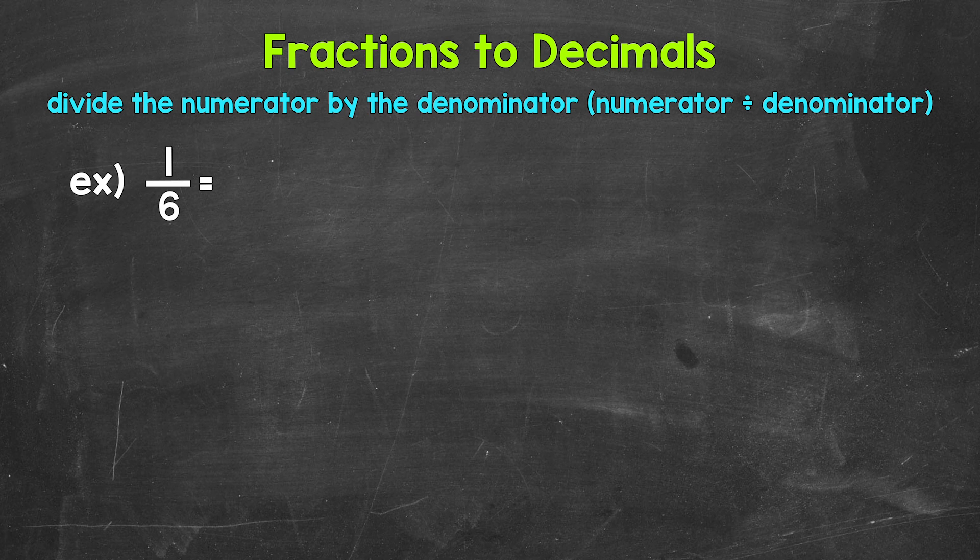So for 1 sixth, we can set this up as 1 divided by 6. Then we go through the division process. So we have 1 divided by 6. How many whole groups of 6 in 1? How many 6's in 1? Well, we can't do that. So we need a decimal and a zero in order to work through this.